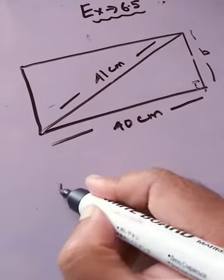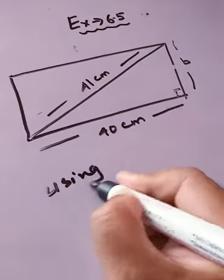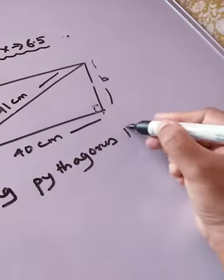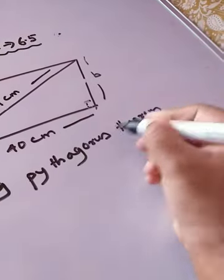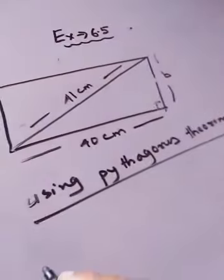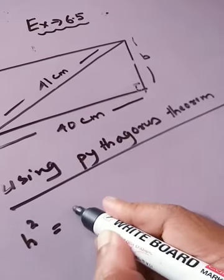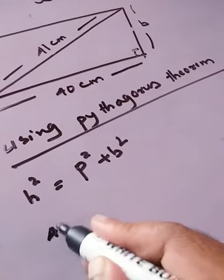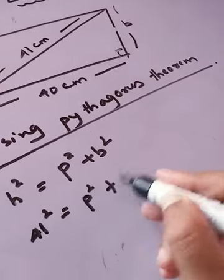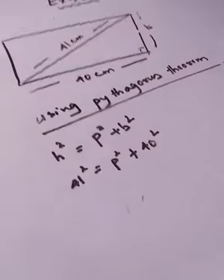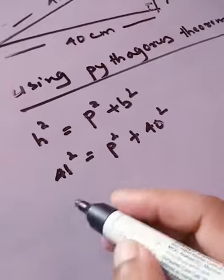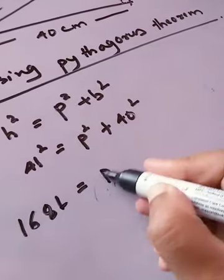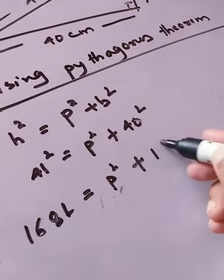Using Pythagoras theorem: H square equals P square plus B square. H is 41, so 41 squared is 1681. P we have to find, and B is 40, so 40 squared is 1600.